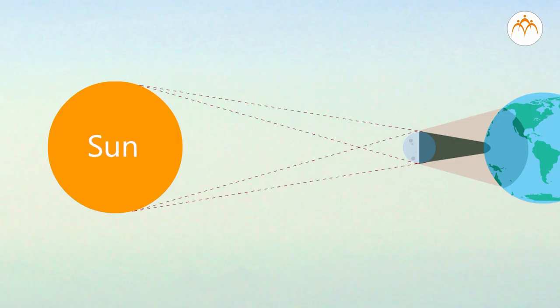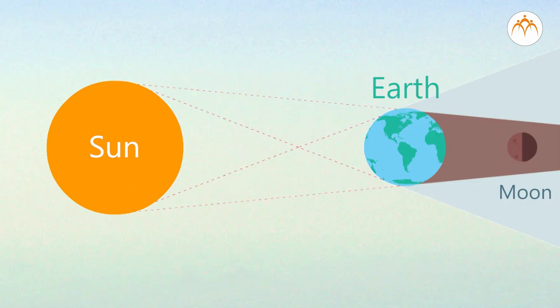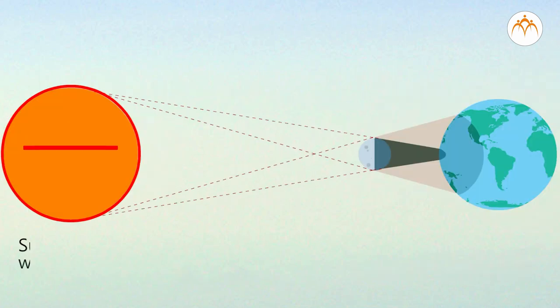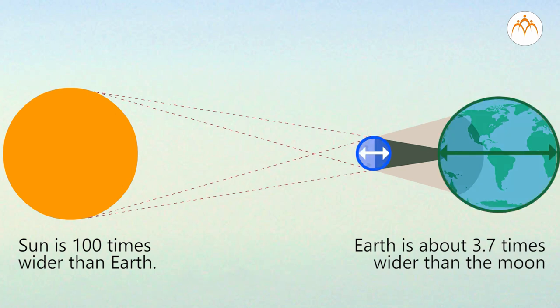The sun is a light source. When the moon is an obstacle, we see the solar eclipse. When the earth is an obstacle, we see the lunar eclipse. The sun is 100 times wider than earth. Earth is about 3.7 times wider than the moon.